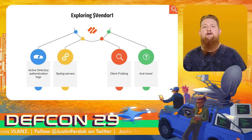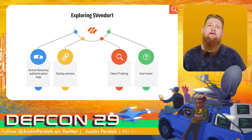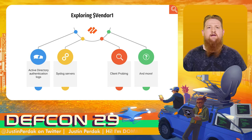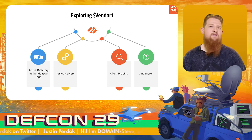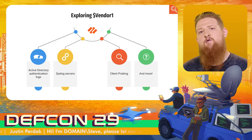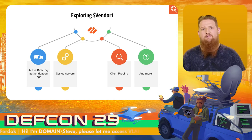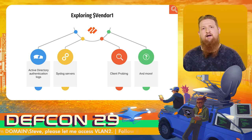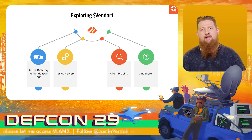Palo Alto User-ID creates a user-to-IP mapping. This mapping gives visibility within the network — which user is doing what — and allows you to create firewall rules for specific users. User-ID can be configured to collect information from multiple sources, for example: Active Directory authentication logs, syslog servers, and the one we're talking about today — client probing.